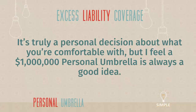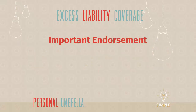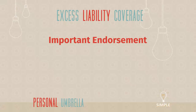There is one endorsement I want to talk about because it's the most common one: uninsured and underinsured motorist coverage on your umbrella. You already have uninsured and underinsured motorist coverage on your auto policy — if you're not sure what that is, go back to the auto video. You can add an additional amount of that coverage on your umbrella. It's usually the same limit as your other liability limit, so if it's a million-dollar policy, you'd have a million dollars for uninsured and underinsured motorists as well.